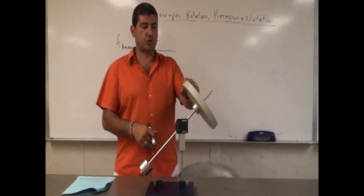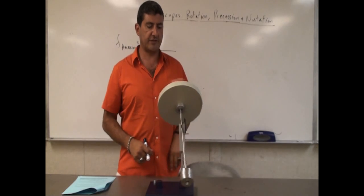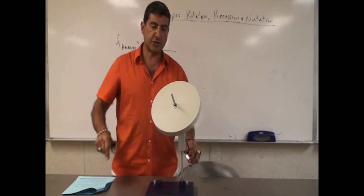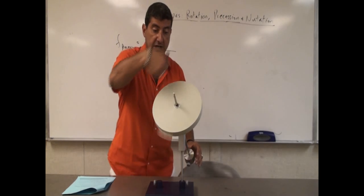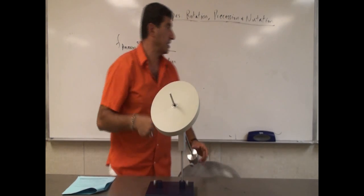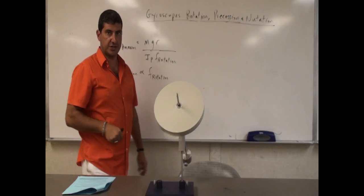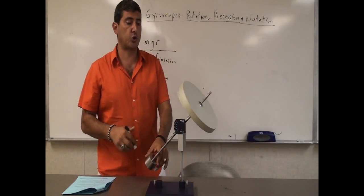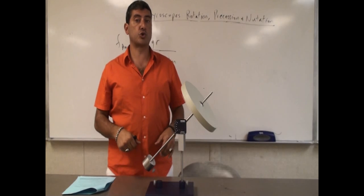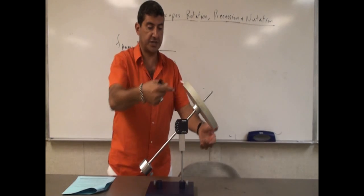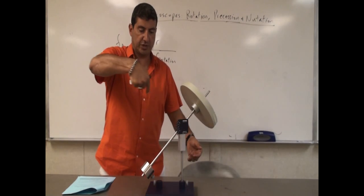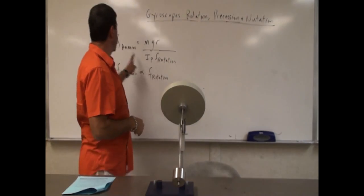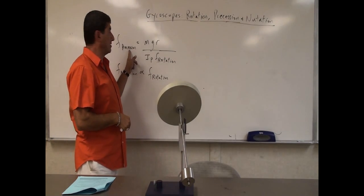So when we have a gyroscope, we can spin it and give it a rotation. You can see here — this is the rotational frequency. The faster I spin it, I increase the rotational frequency. Now, besides the gyroscope rotating, it's also going to experience what we call precession. You see how it's going this way? It's precessing. That's called the precessional frequency.